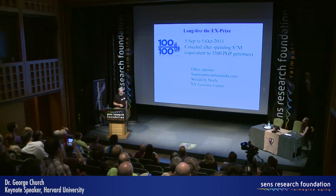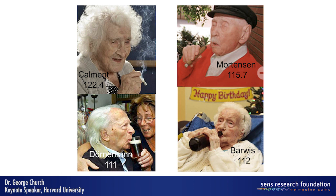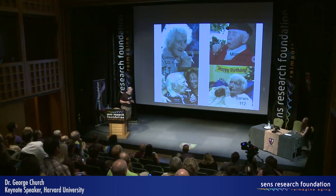Here are some super-centenarians. The take-home is not that you have to smoke and drink in order to live a long time — perhaps they have protective alleles that protect them against environments that all of us share, some more than others.